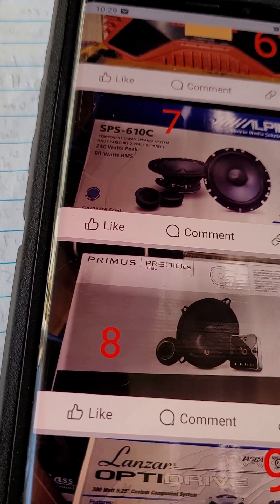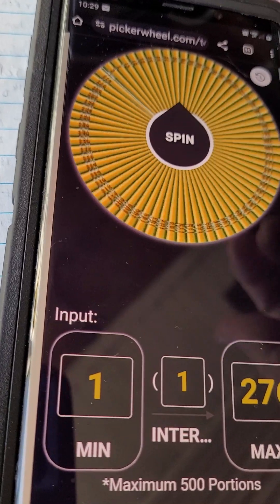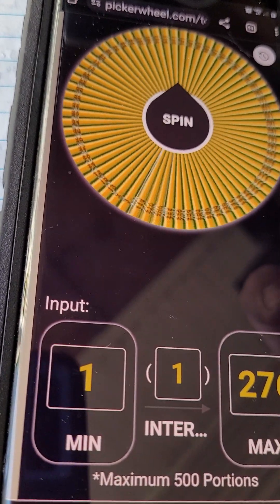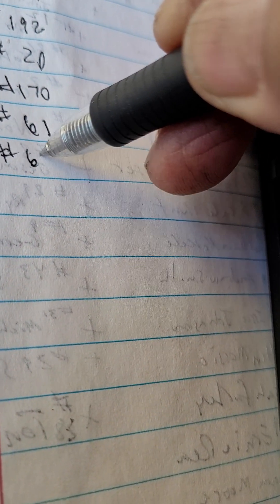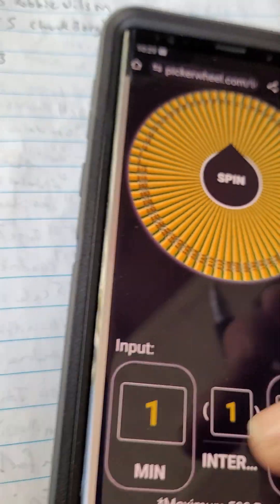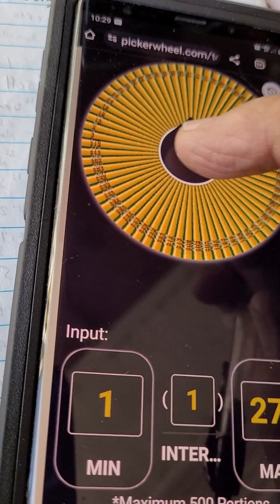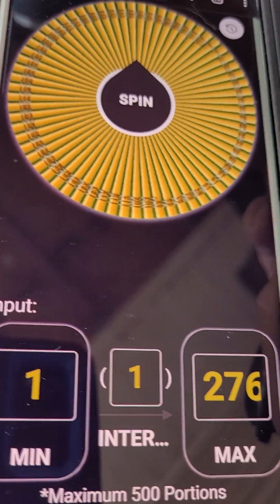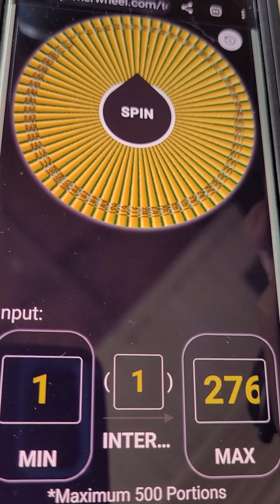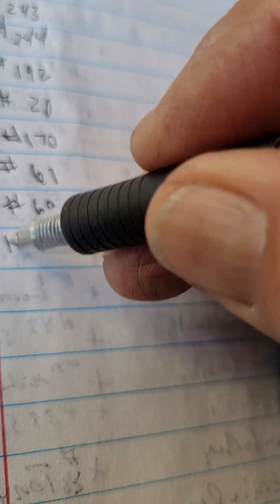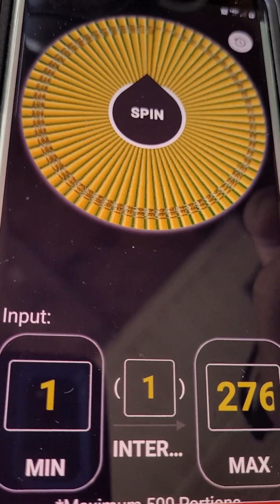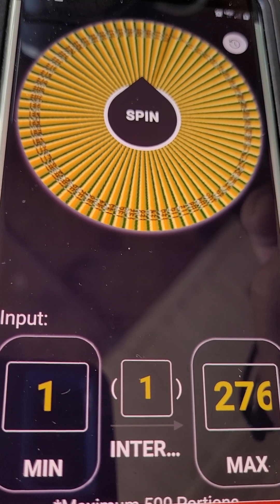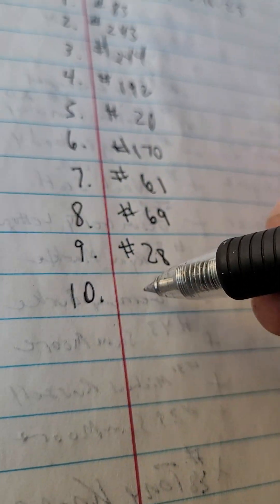Next is the Infinity component set. That is 69. Number 28. And last but not least, the impeccable Boss 3000 watt amplifier. 265. Number 265.